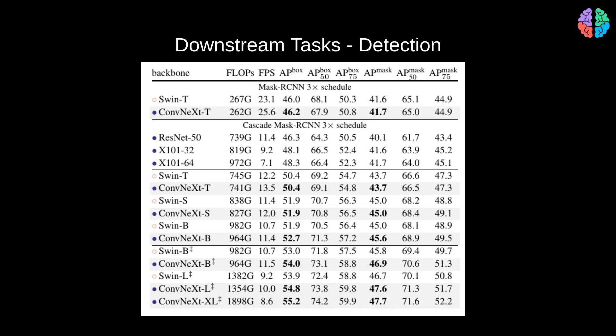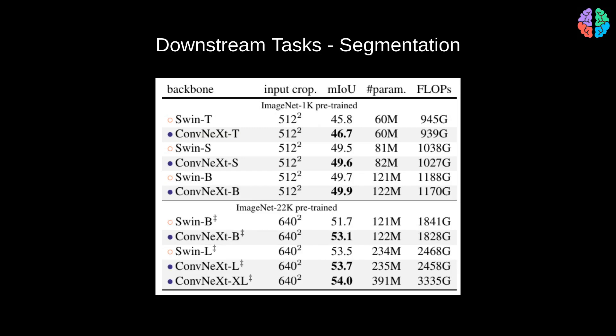Architectures like ResNet and MobileNet have been used as backbones for downstream tasks like detection and segmentation. To complete the argument, the paper shows that downstream architectures can be trained with a ConvNeXt backbone. Replacing the Swin Transformer backbone with ConvNeXt in Mask R-CNN clearly shows better average precision on the COCO dataset. Similarly for segmentation, benchmarking on ADE20K shows ConvNeXt backbone outperforms the Swin Transformer backbone — clearly showing there is no reason to discard the ConvNeXt architecture in favor of transformers.